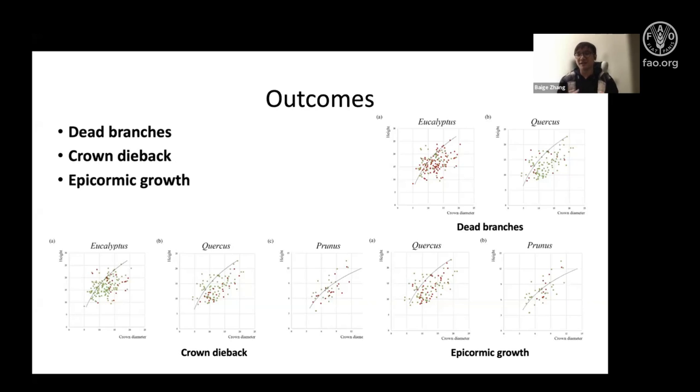But it is not true for epicormic growth. We found that in Quercus, epicormic growth can restrict tree growth, but cannot affect that for crown dieback. So we identified that epicormic growth, even though it has been assumed as a stress signal, does not affect the capacity of ecosystem services delivery so significantly.